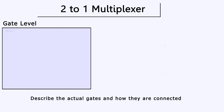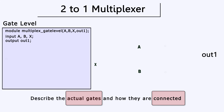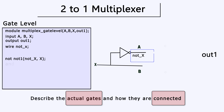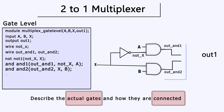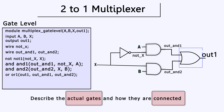Let's model this two-to-one multiplexer at the gate level, where we describe the actual gates and how they are connected. Modeling in Verilog at the gate level is a matter of instantiating each logic gate independently and making sure they're connected together in the desired way. We need to create wires to make connections between gates. This is viable but not very practical as designs become more complex — gate level modeling is only good initially for very simple circuits.